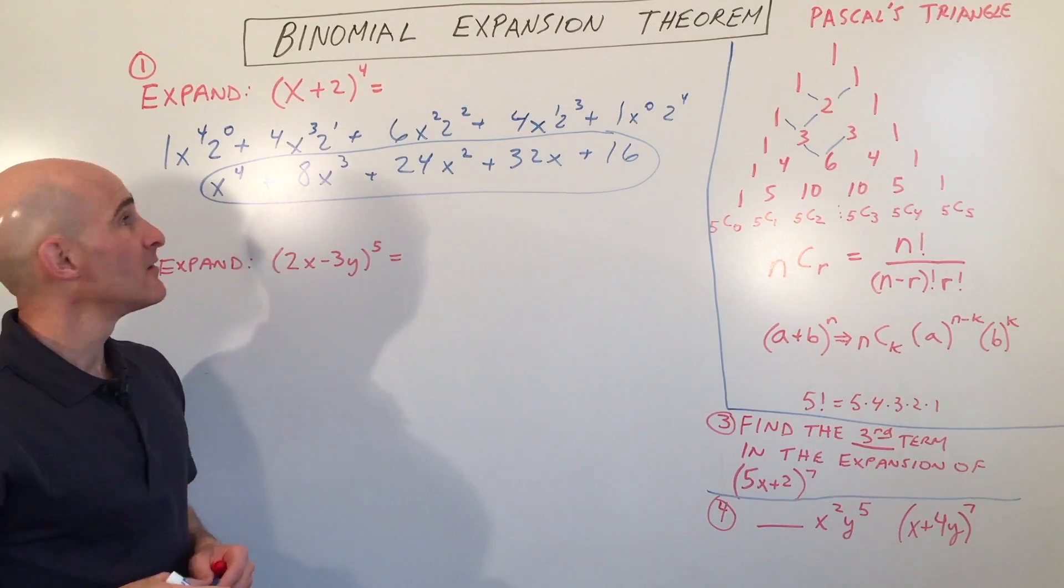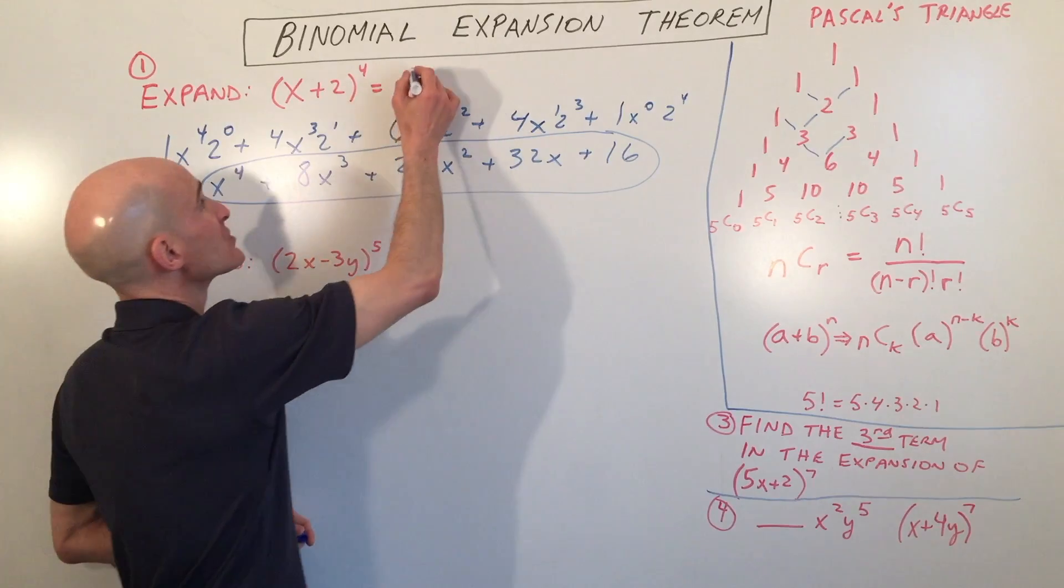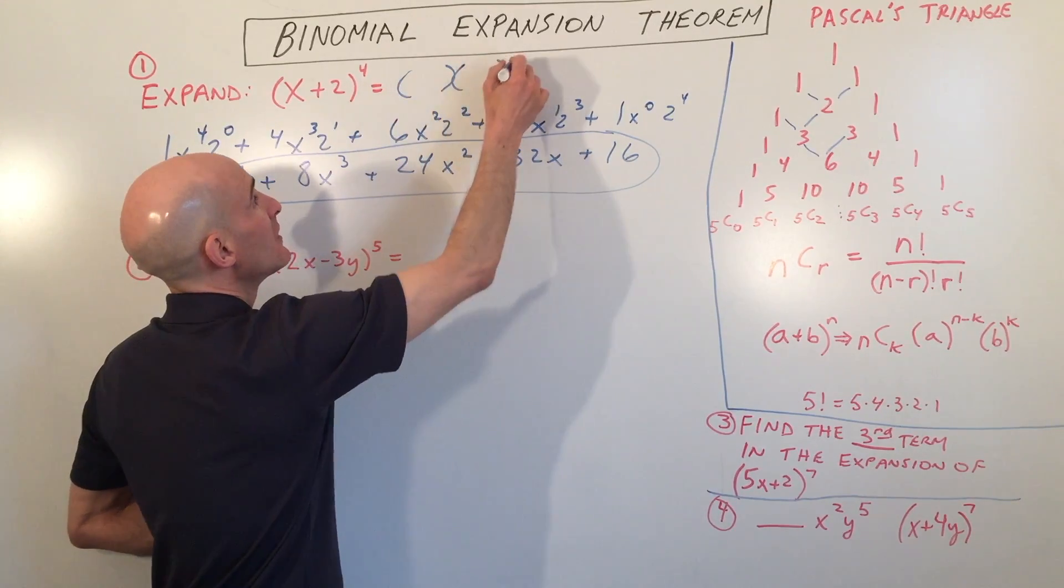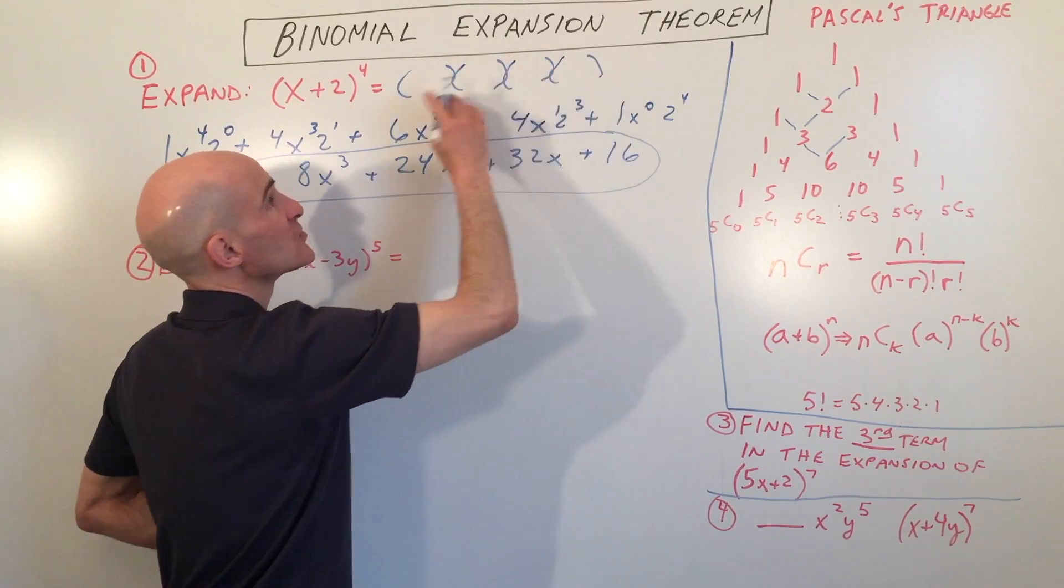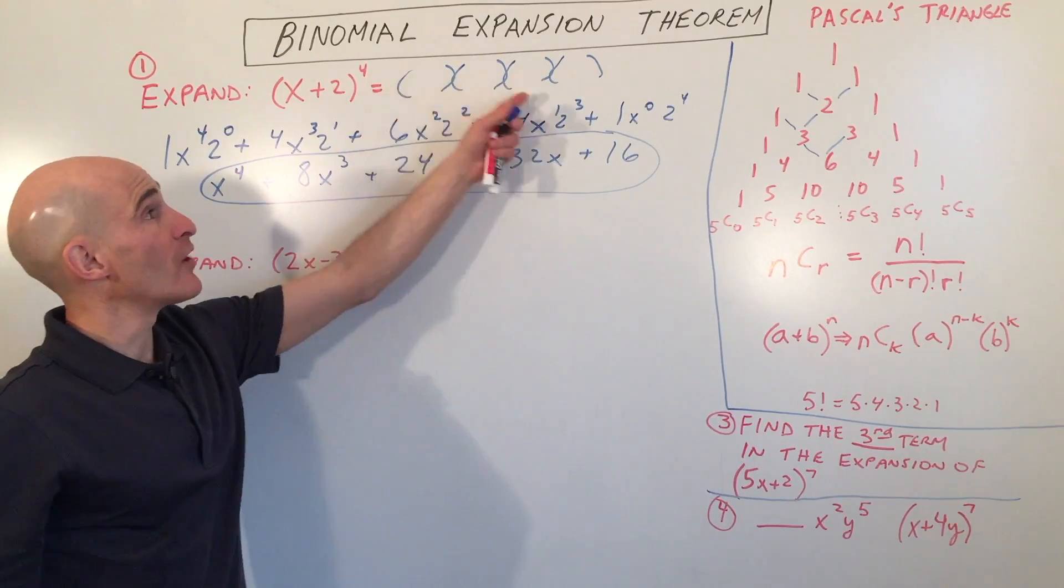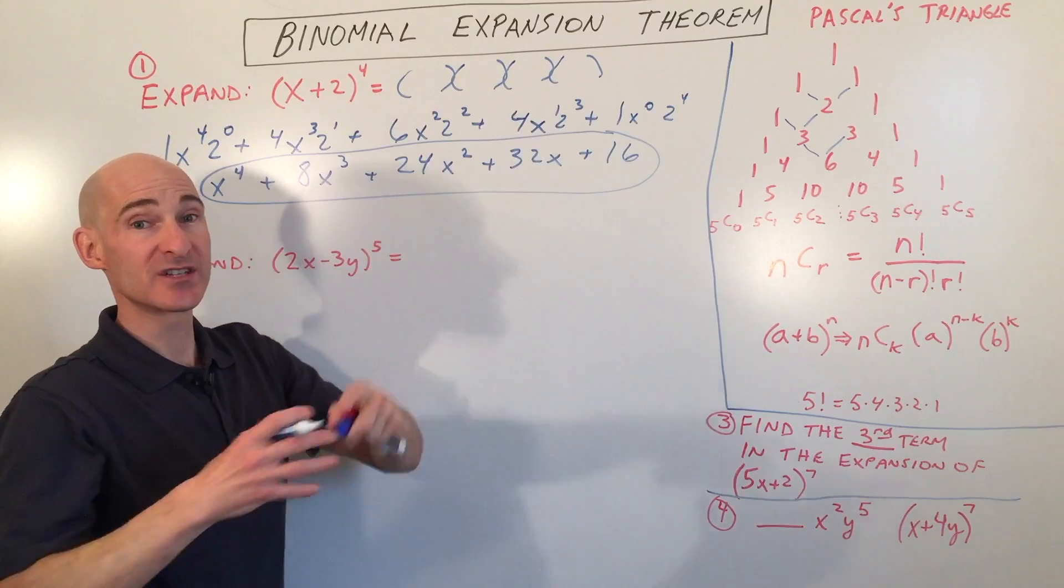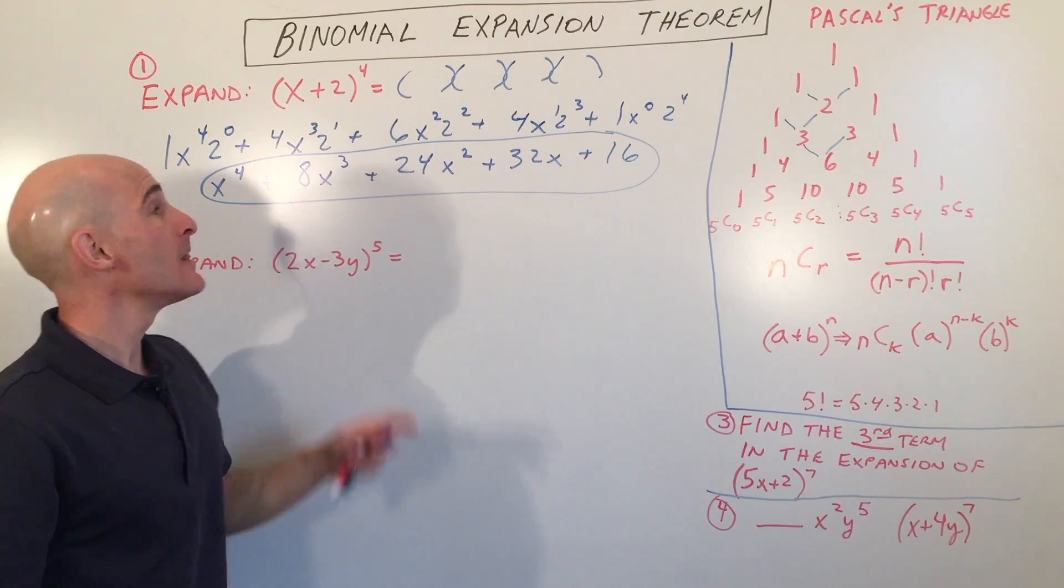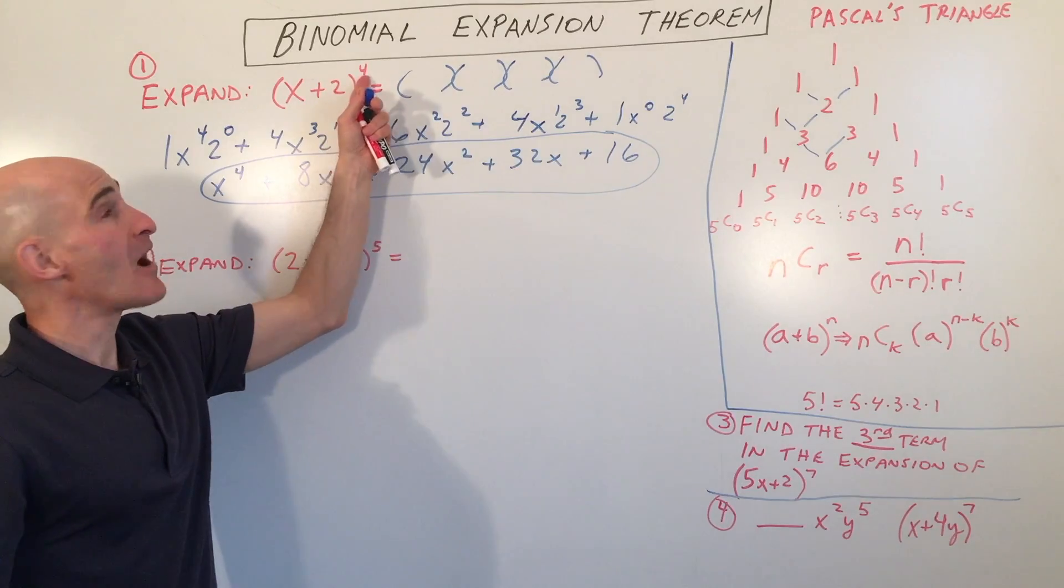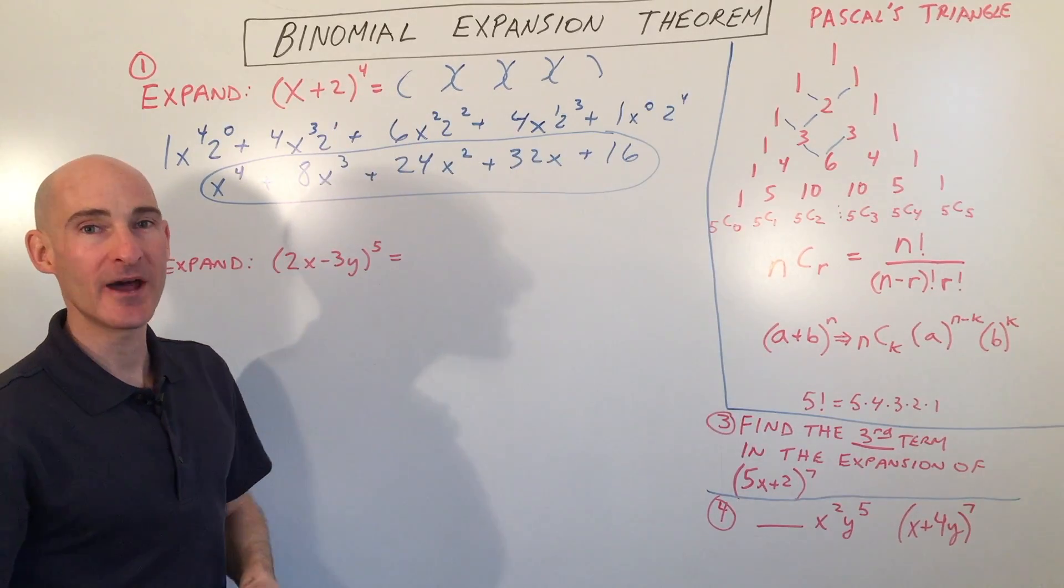Now just to kind of recap here, another way to do this, of course, is to write x plus 2 times x plus 2 times x plus 2, four times, and go ahead and distribute or do the FOIL method and work through all those and expand it out, combine like terms. But you're going to find that this is a lot faster, especially as this power goes up and up and up.